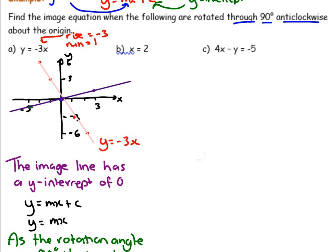Next one: find the image equation when rotating 90 degrees anticlockwise about the origin. So b is x equals 2. x equals 2 is just a vertical line through the point x equals 2. If you rotated this red line 90 degrees anticlockwise, where would it end up? 90 degrees anticlockwise, it'll become a horizontal line through y equals 2. We can call this line y equals 2.